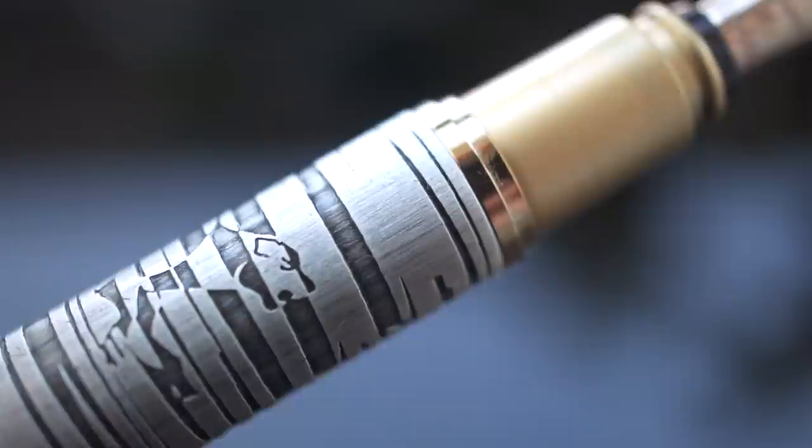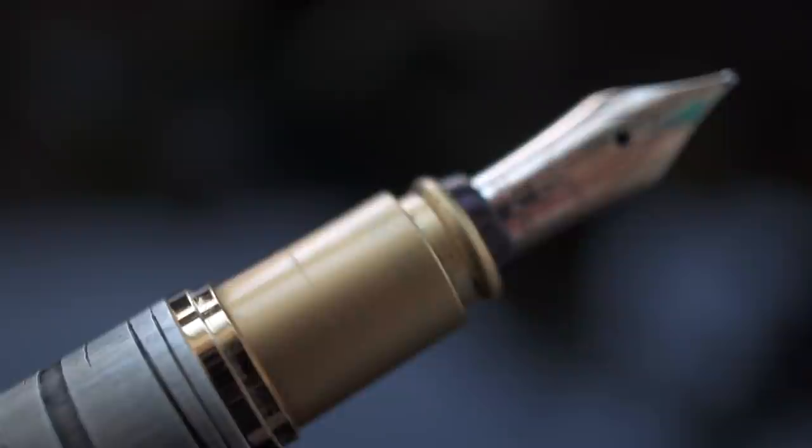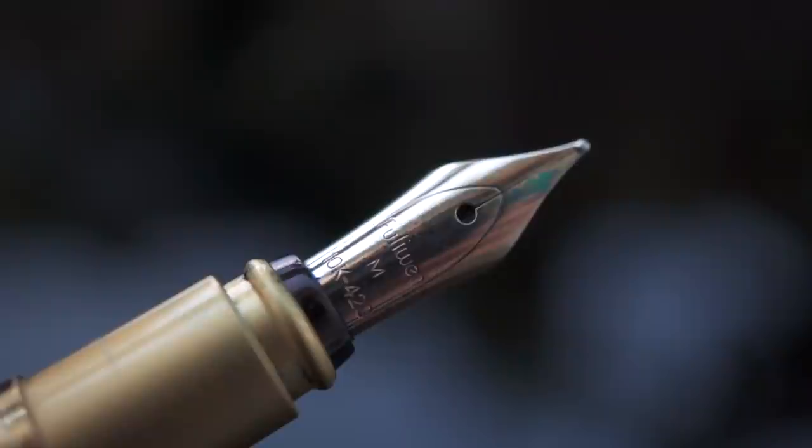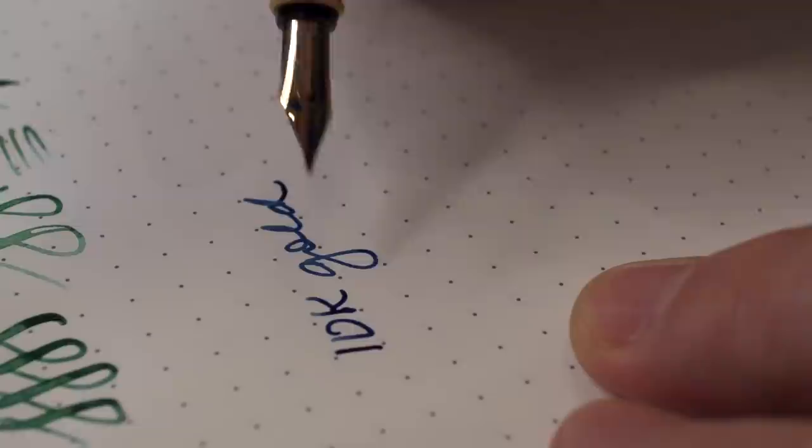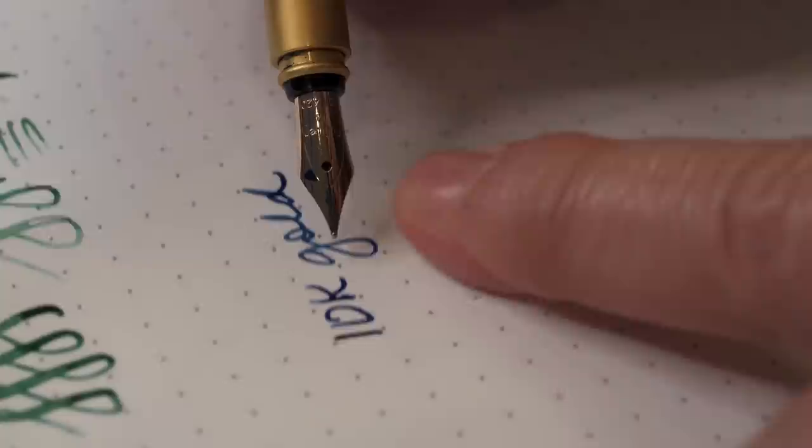So yeah, gold prices have kind of forced some things to happen that we don't normally see. 10 karat gold is 41.66 percent gold, which should mean a marking of 417, but for some reason the markings on this nib is 420. I'm not really sure why.